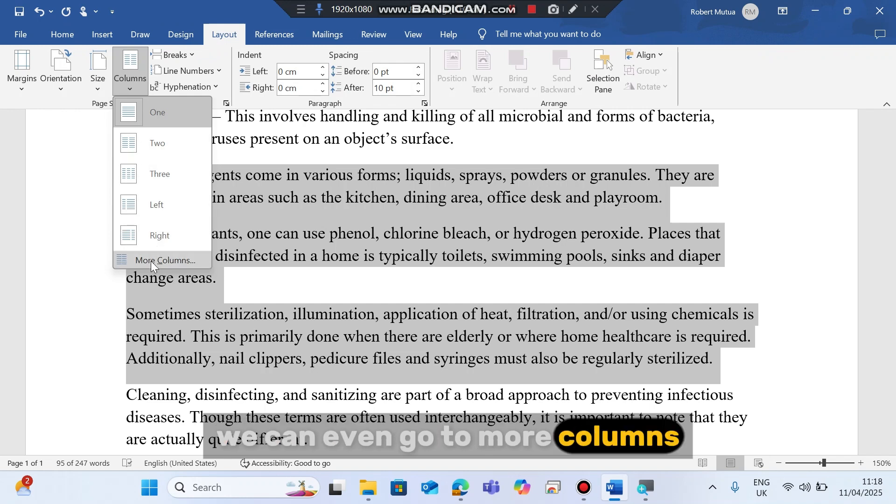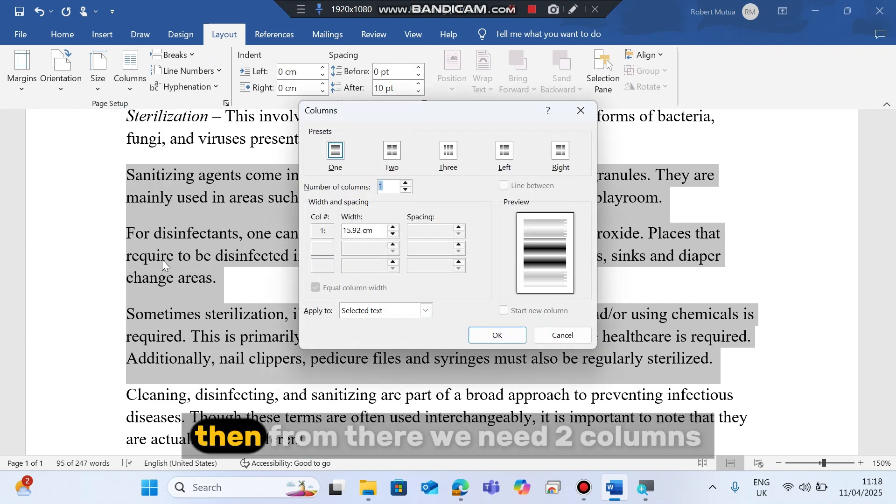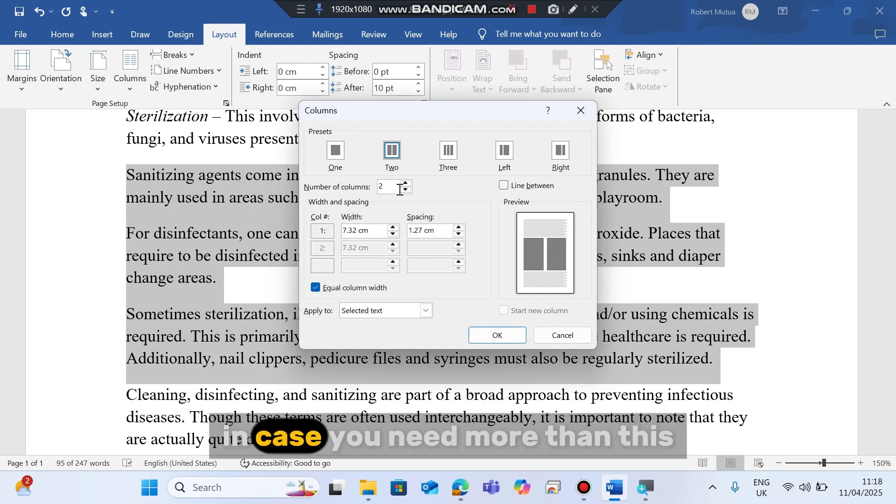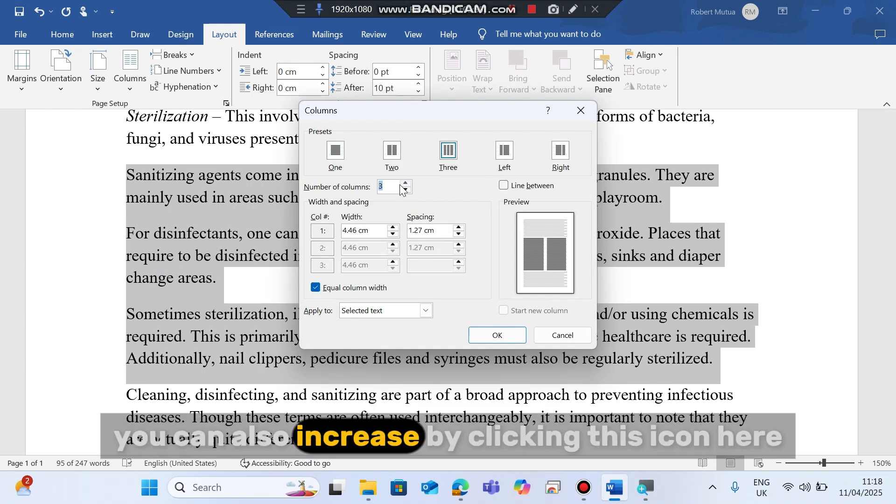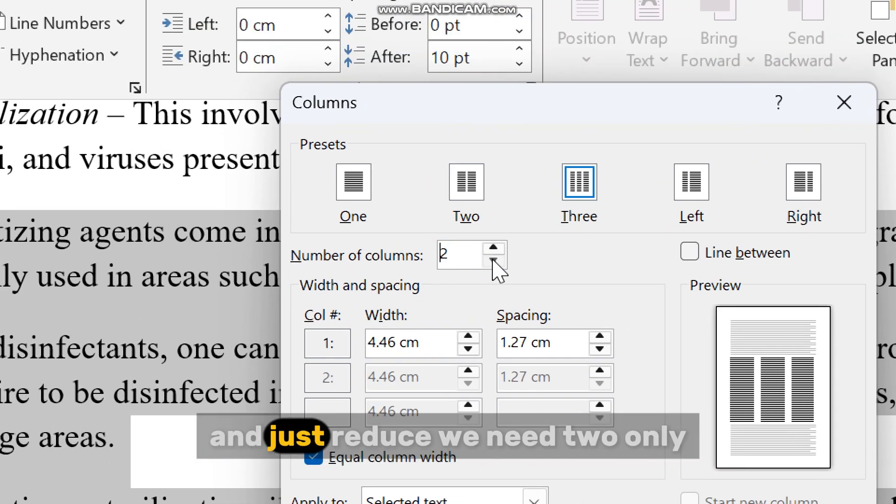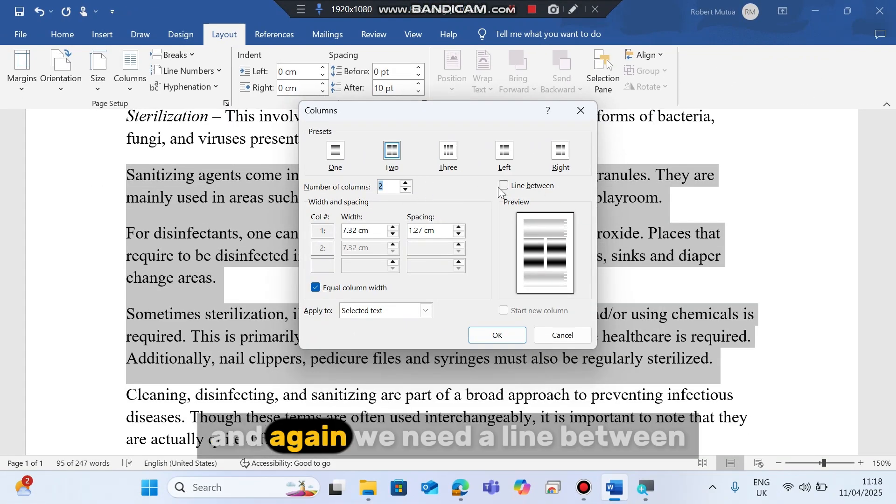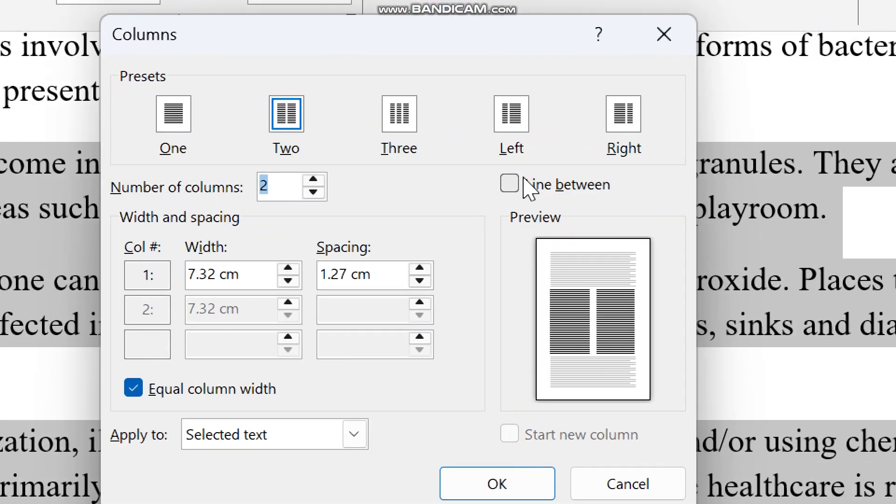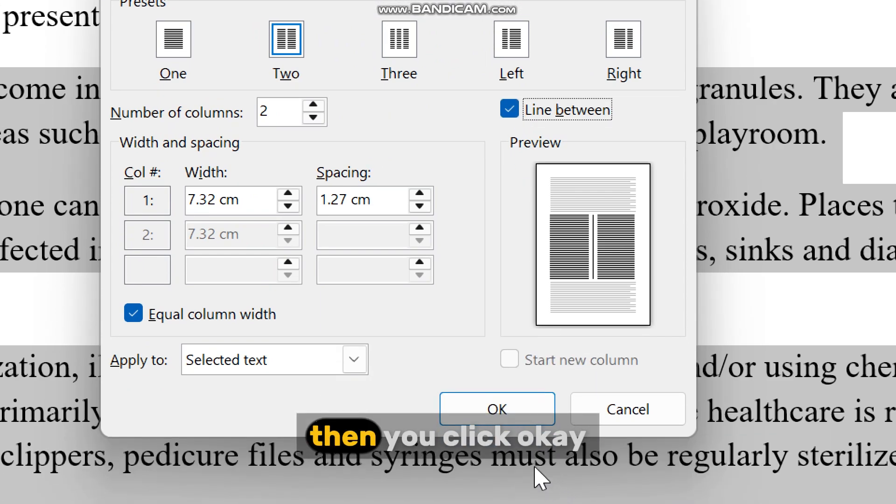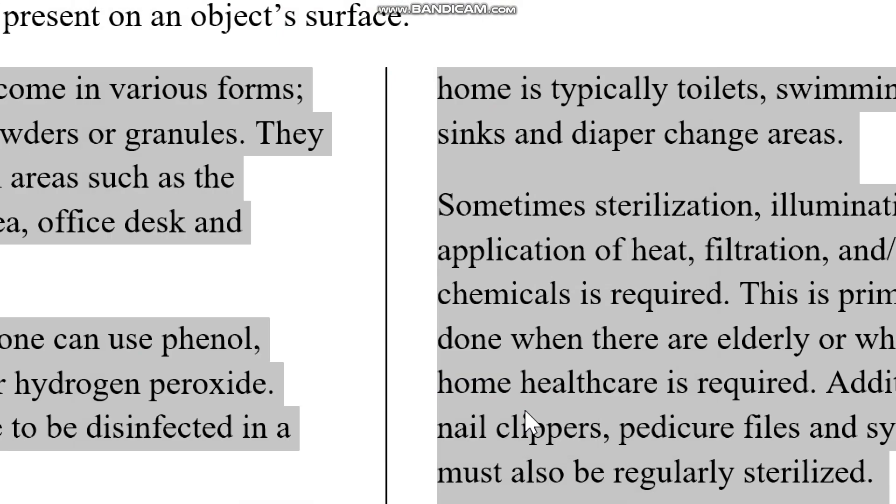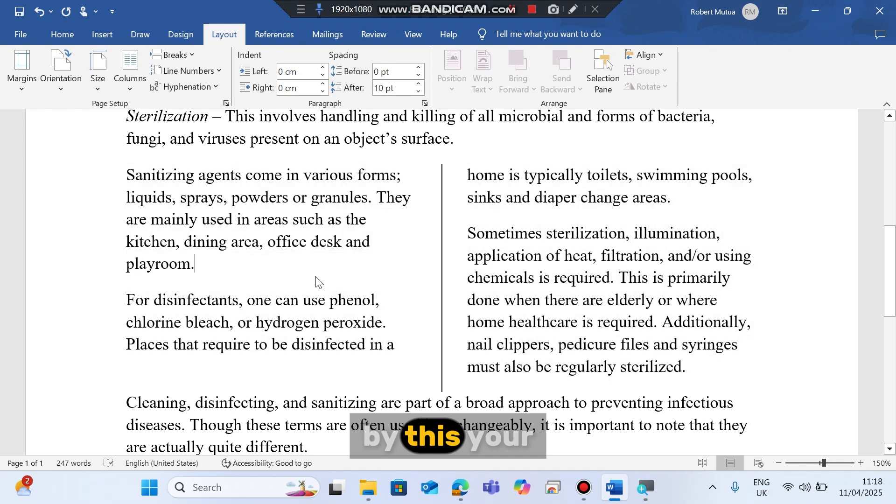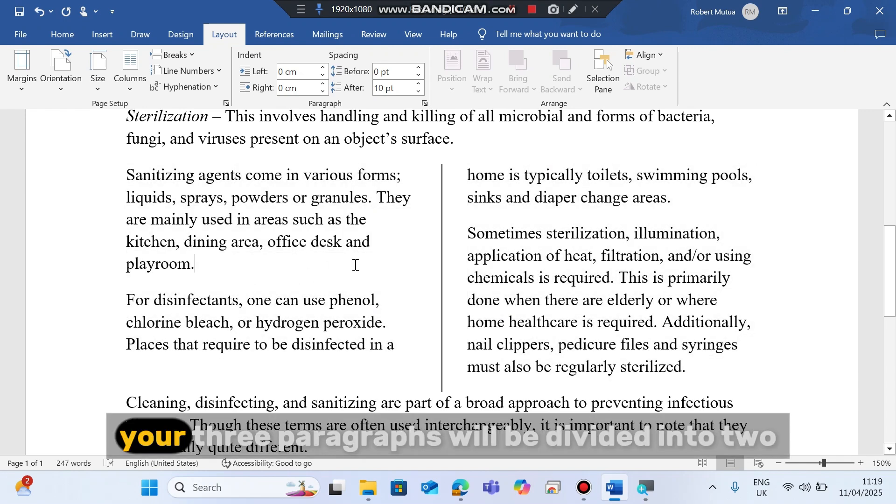And from there we go to layout where we find different page formatting features. Then select column. You can even go to more columns, then from there we need two columns. In case you need more than this, you can also increase by clicking this icon here. We need two only and again we need a line between. Then you click OK like this. Your three paragraphs will be divided into two.